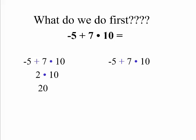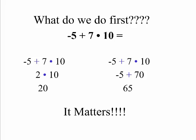Let's try the multiplication first and see if we get the same answer. We have negative 5 plus 7 times 10. If I do 7 times 10, I get 70. Now negative 5 plus 70 gives me 65. We get two different answers — if I do the addition first I get 20, if I do the multiplication first I get 65. So it does matter which operator you do first.